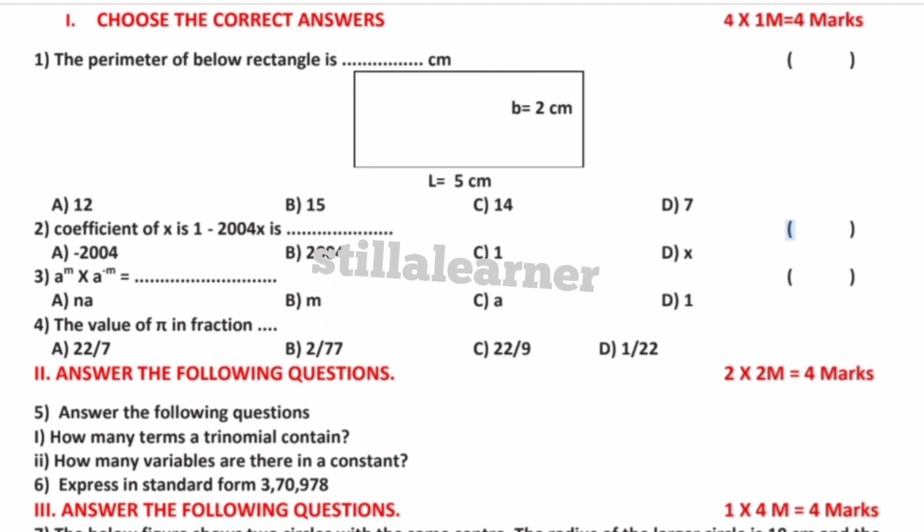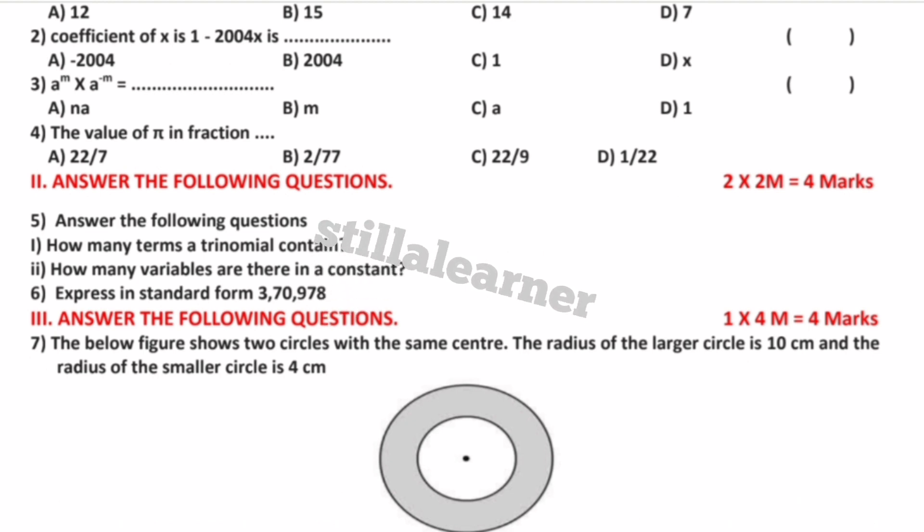In the first fifth question, again two points will be there. Then coming next to the third Roman numeral, here only one question will be given for you which carries four marks. There is no choice question for this also.